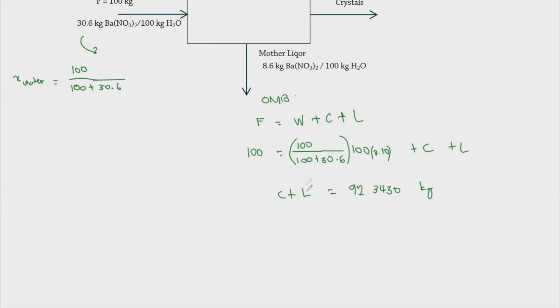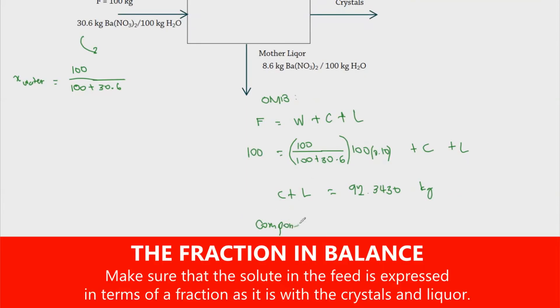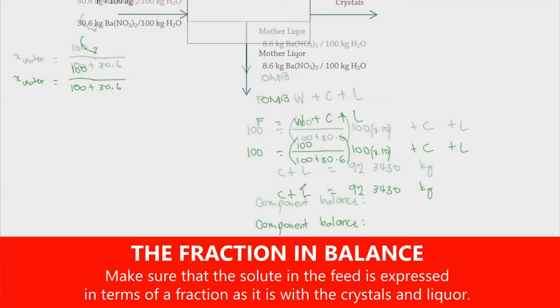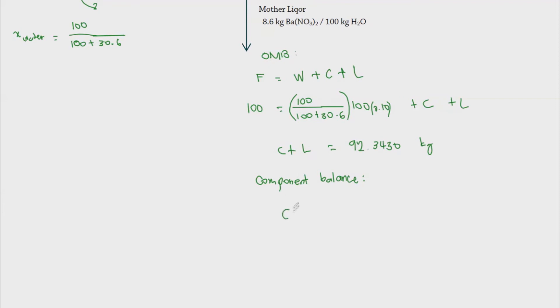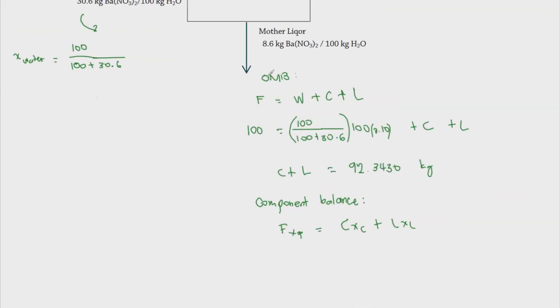Now we proceed with the component balance. And the component that we'll be balancing here is the solute. So we know that to balance the solute, we have F x F is equal to C x C plus L x sub L. And we know that we don't have to add water because we don't have any solute in the vapor phase. So what we have here is the feed which is 100. And then the amount of solute present is simply 30.6. Now this is divided by 100 plus 30.6 because that is the solution.